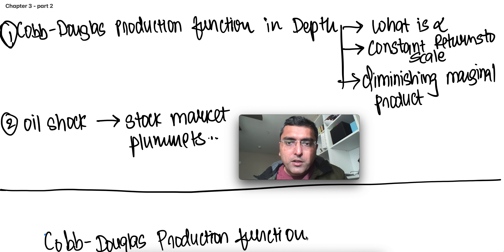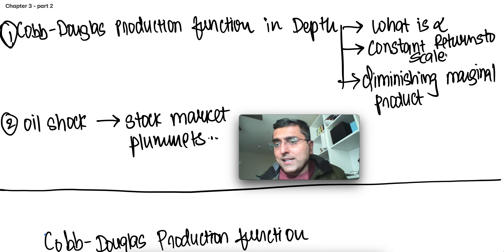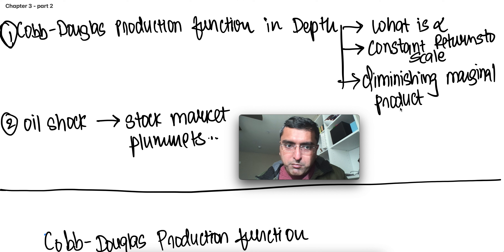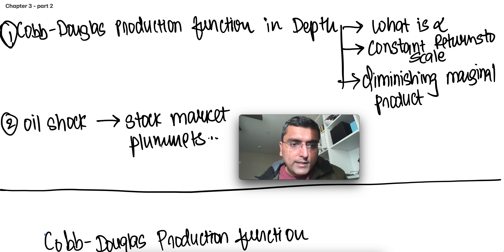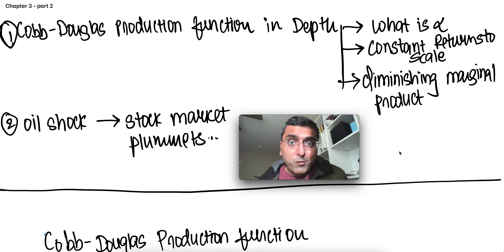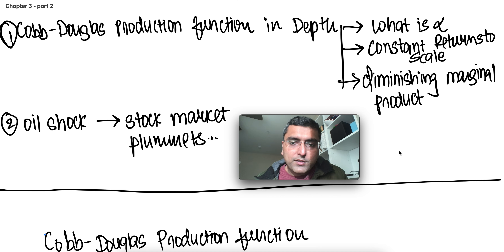The two topics I'm going to go deep into are the Cobb-Douglas function — specifically, I'll cover what alpha is, why we say it has constant returns to scale, and why we say that the Cobb-Douglas function has diminishing marginal product. Second, I'll go in depth on how oil shocks have a direct correlation with stock markets plummeting. Most of these topics I covered in part one, but this is in more depth and also clarifies some things I missed in the first video.